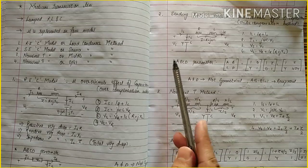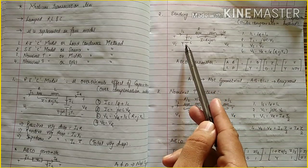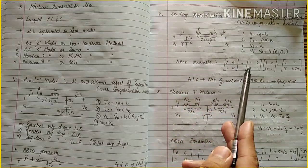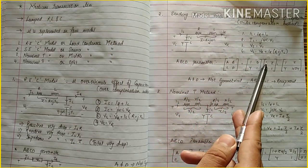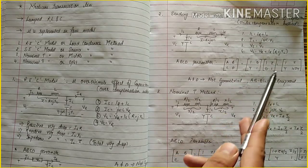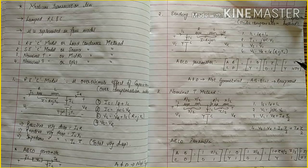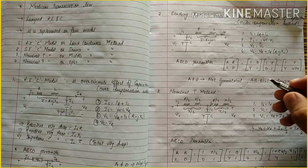The ABCD parameter is calculated the same way, individually. For the shunt capacitance the matrix is [1, 0; Y, 1], and for the impedance the matrix is [1, Z; 0, 1]. The combined result gives AD minus BC equal to 1, which is reciprocal.